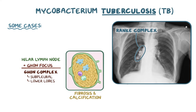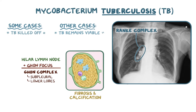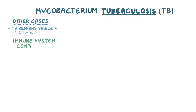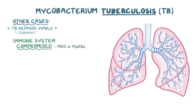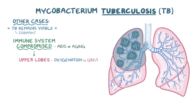In some cases, although a scar is left over, the mycobacteria are killed off by the immune system, and that's the end of that. In other cases, even though they're walled off, they remain viable and dormant. If and when a person's immune system becomes compromised, like with AIDS or with aging, the Ghon focus can become reactivated, and the infection can spread to either one or both upper lobes of the lungs. It's thought that this is because oxygenation is greatest in these areas, and TB being an aerobe prefers areas of greater oxygenation.